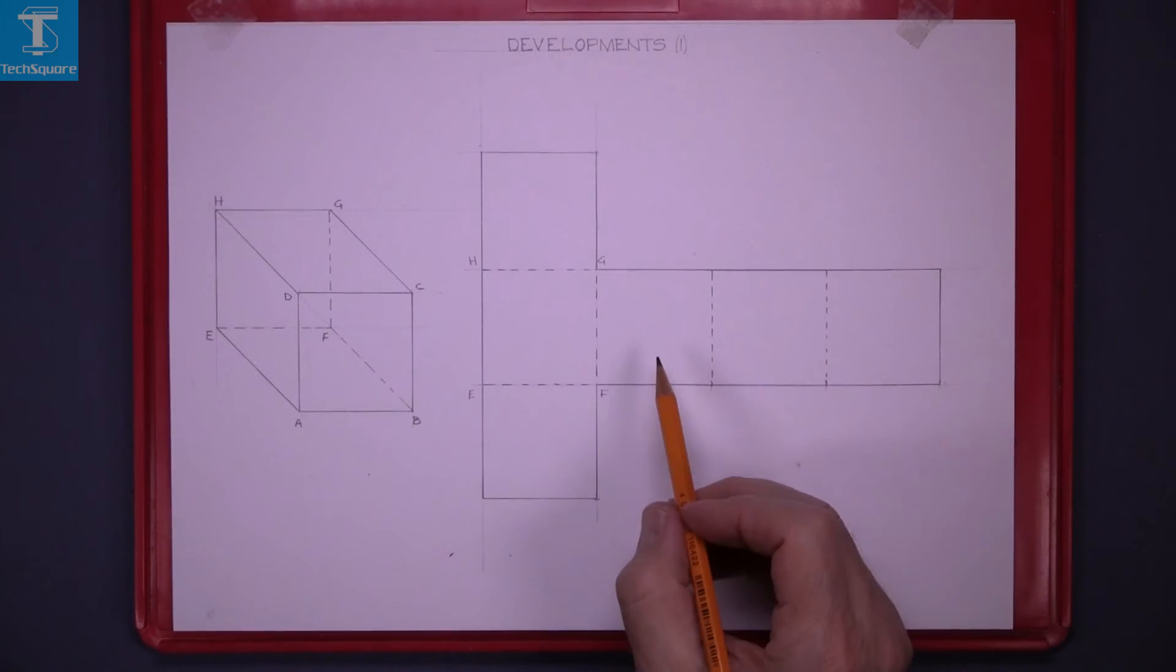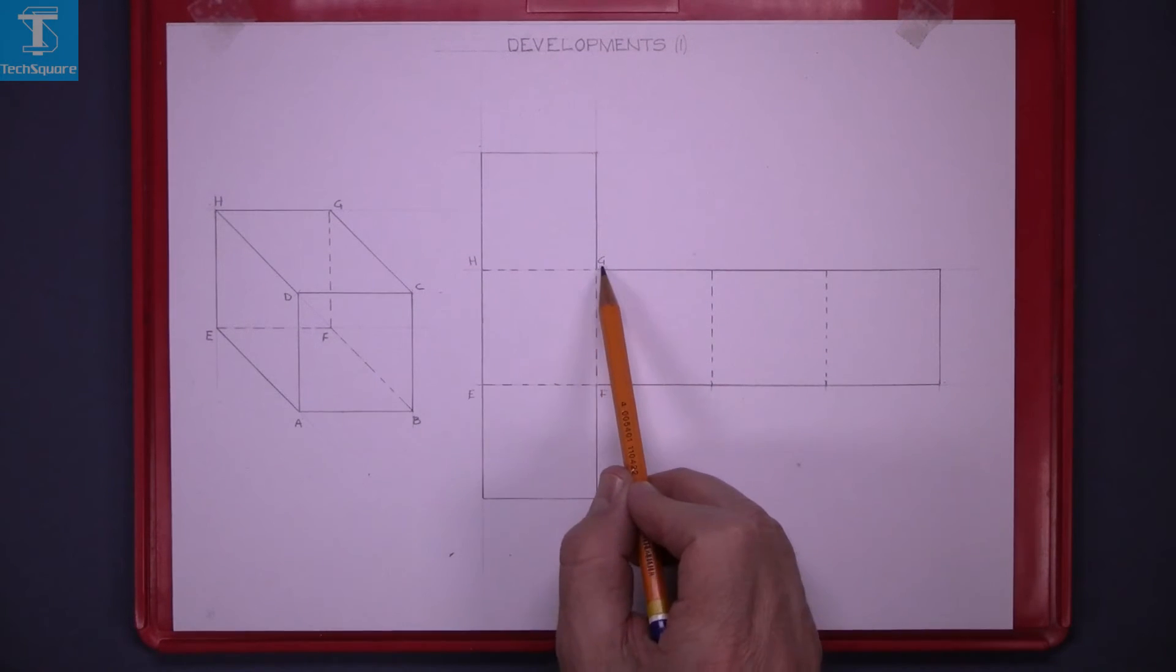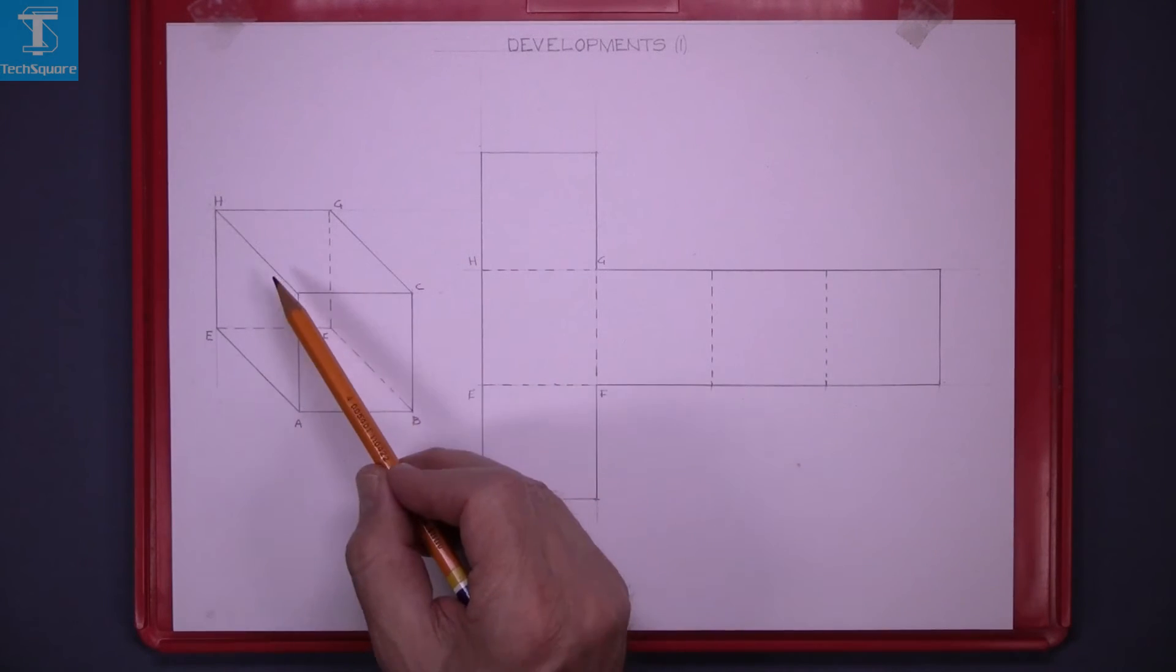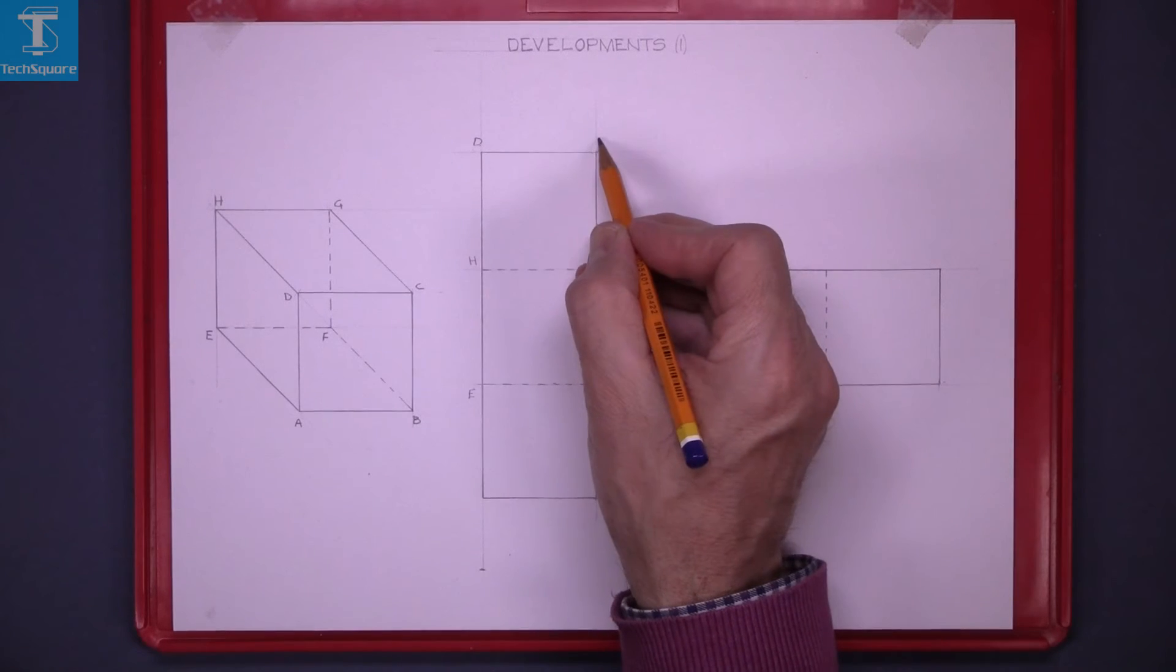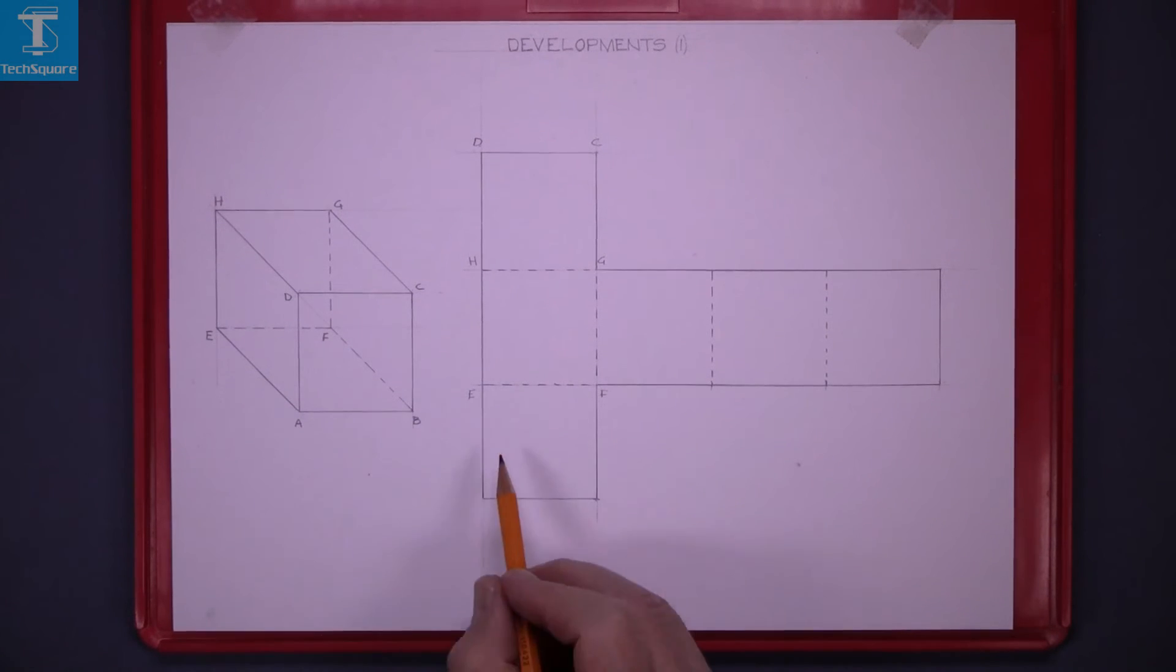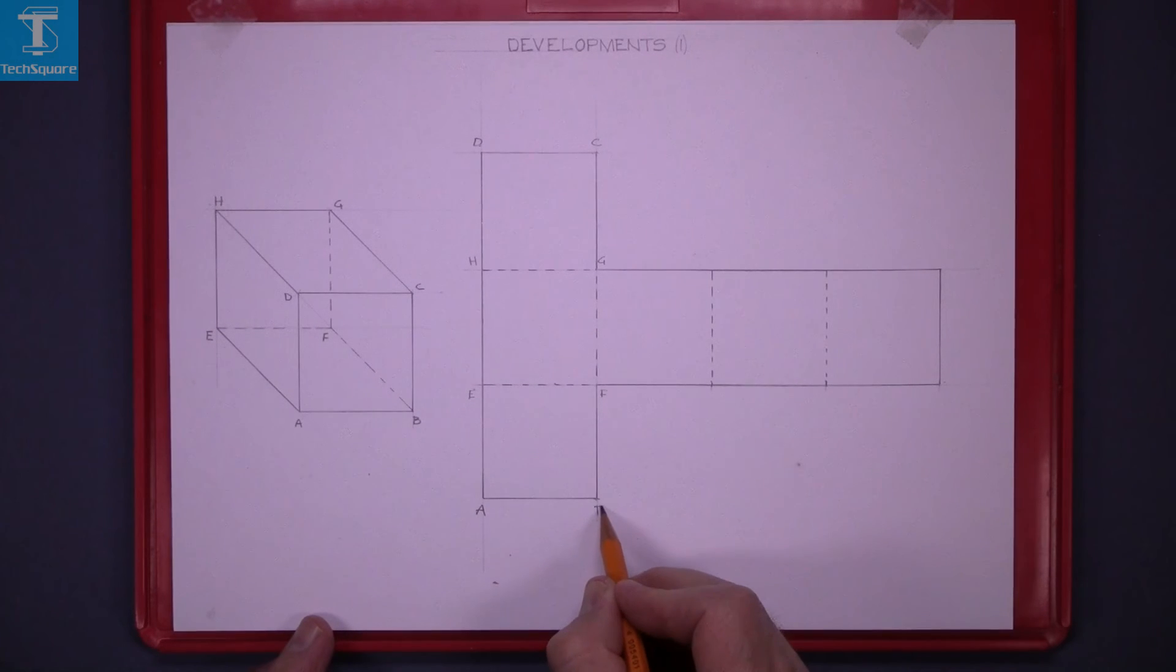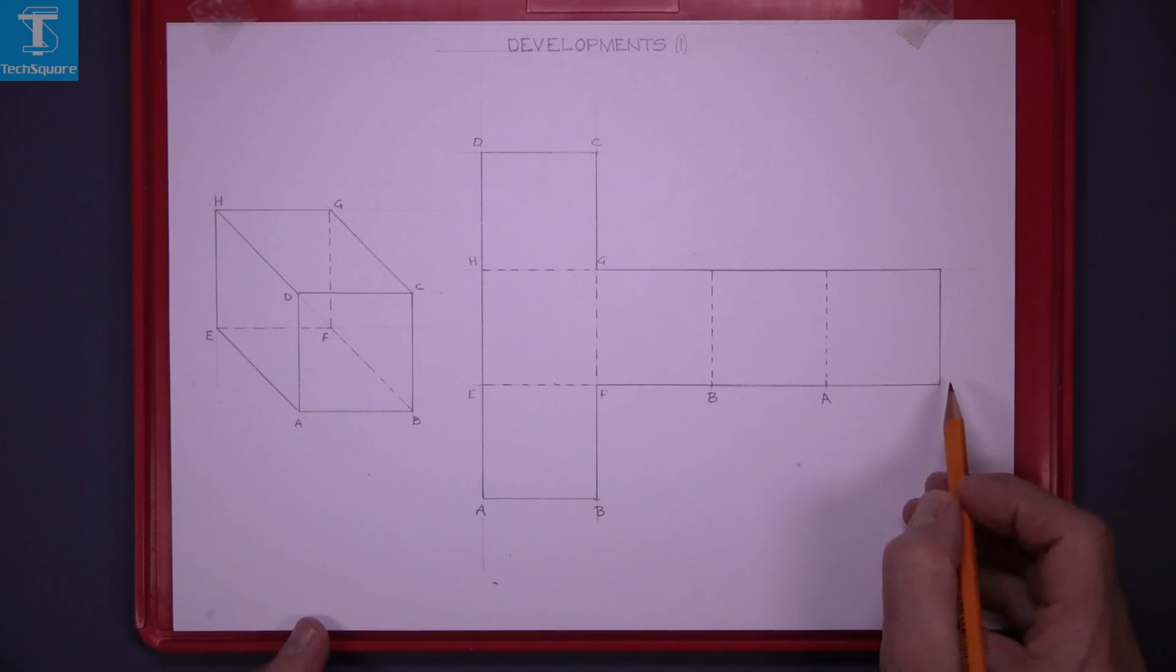And now to index the points. The back surface here is HGFE. The top is HGDC. So opposite H is the letter D, and opposite G is C. On the bottom opposite E is A, and opposite F is B. This first point here when folded in will meet B, so that's B, point A, and then back to E.